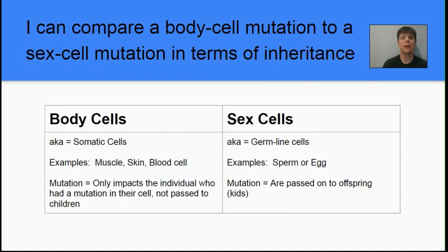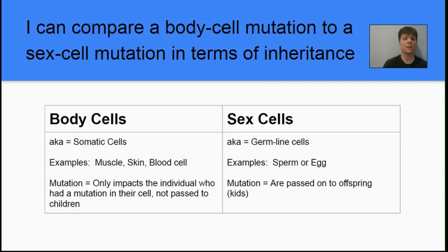Our next learning target is to compare a body cell mutation to a sex cell mutation in terms of inheritance. Body cells are also called somatic cells — examples include muscle cells, skin cells, and blood cells. If we have a mutation in a somatic cell, it's only going to affect the individual who has that mutation; they would not pass it on to their children. It's a very different story in sex cells, also known as germline cells or germ cells — not to be confused with bacteria or viruses that we call germs; this is a different meaning of the term.